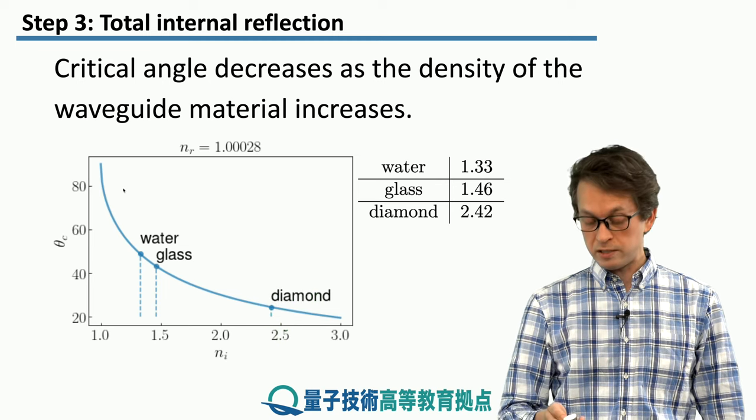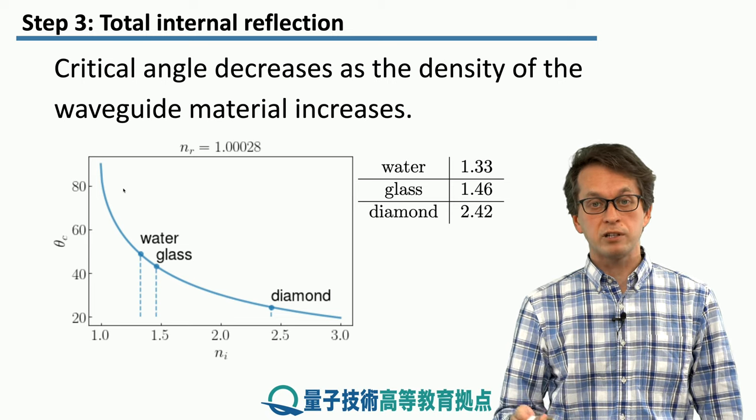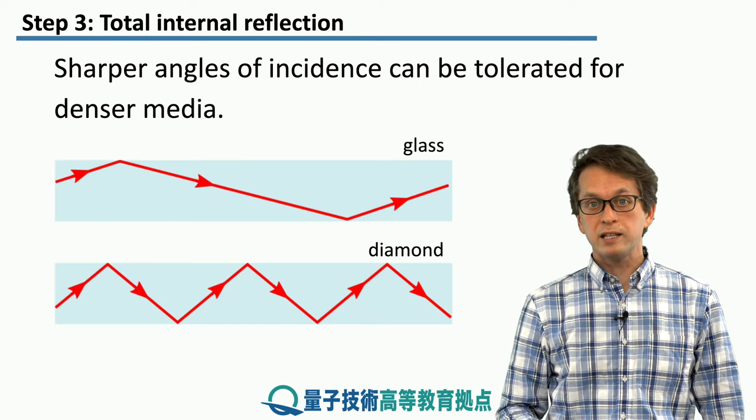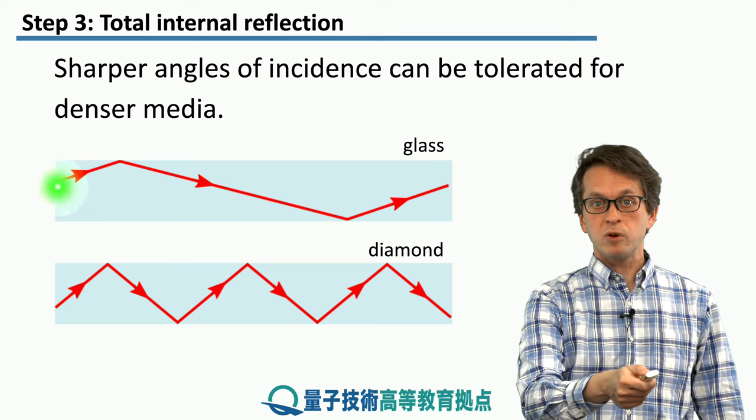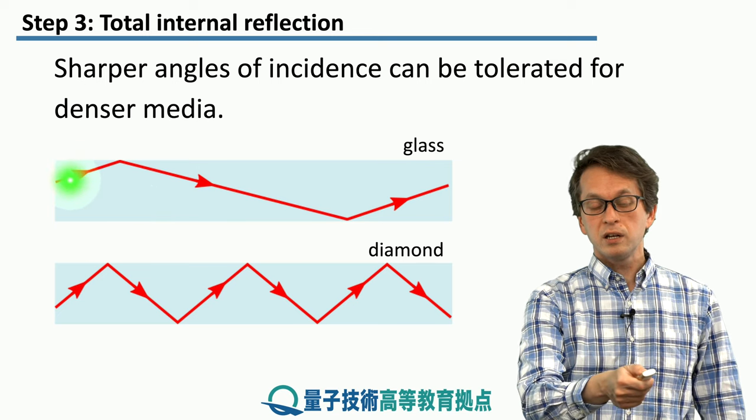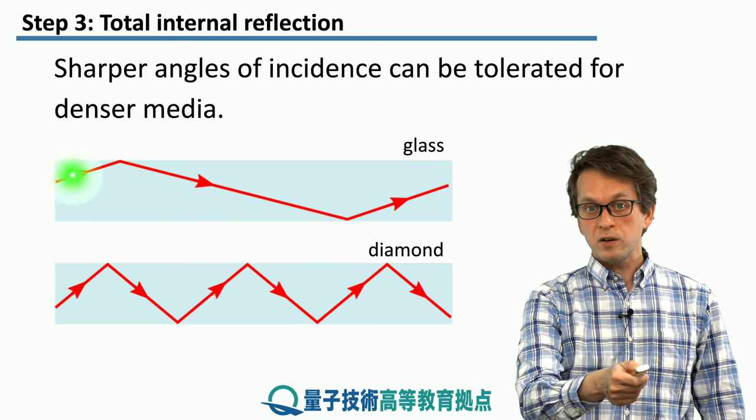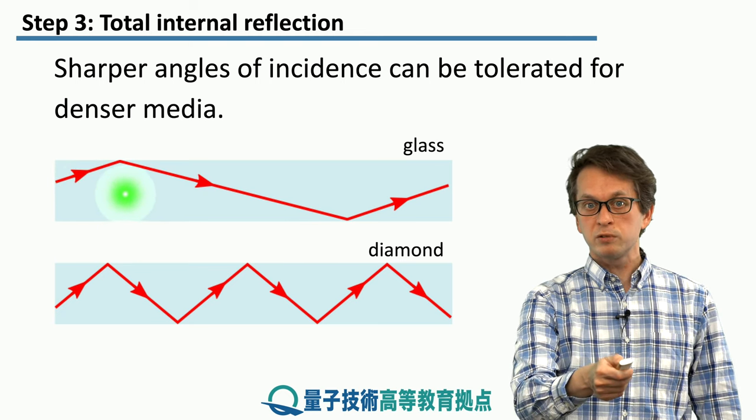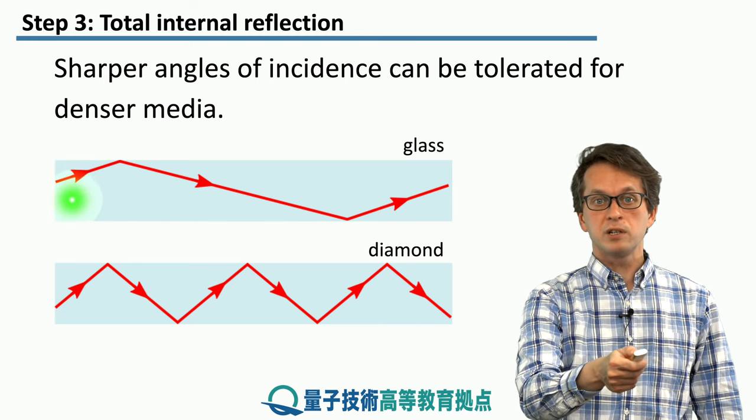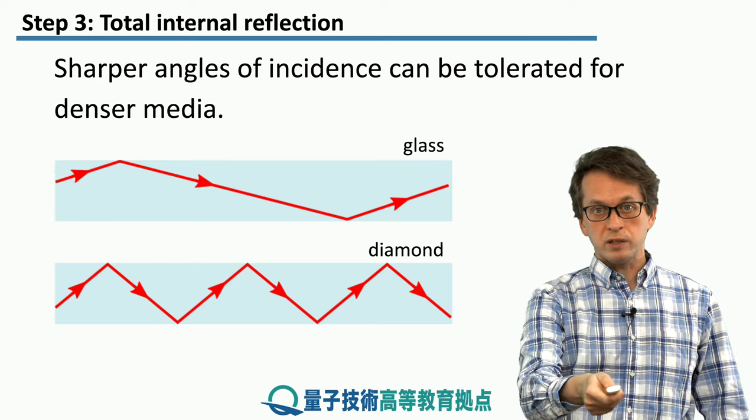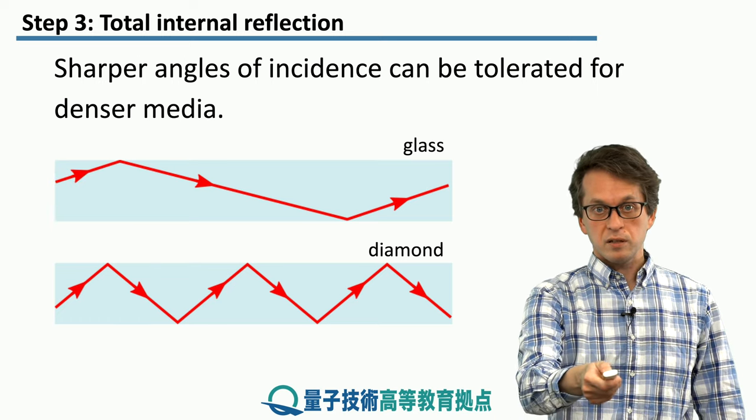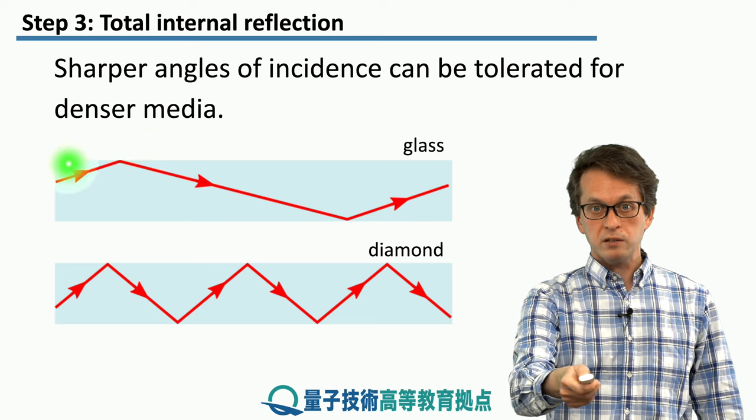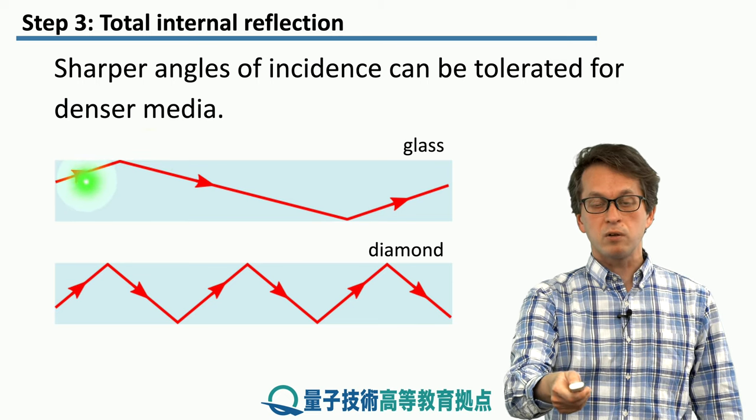So what does all this mean, that the critical angle is decreasing? Well, it means that in glass, if we want to obtain total internal reflection, then the angle of incidence, which again I remind you is the angle between the incident light ray and the normal to the surface, has to be large. Meaning that the angle between the surface, so the measure with respect to the interface between air and glass, has to be quite small. Then we get total internal reflection.